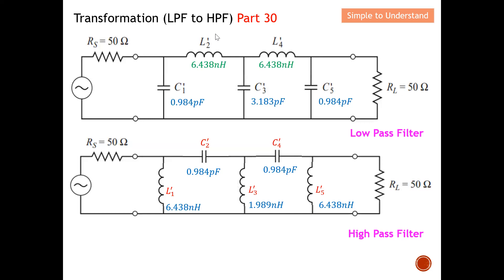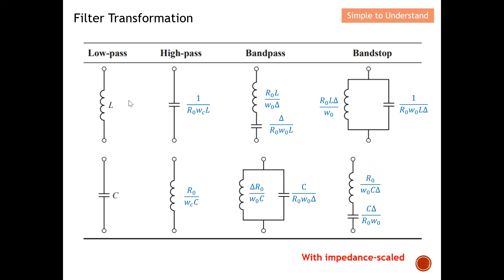On the previous Part 30 discussion, I demonstrated how to do a filter transformation from low pass filter to high pass filter. This diagram shows the lumped element having the characteristics of a low pass filter. With different values of lumped elements, you can see that the capacitor becomes an inductor and the inductor becomes a capacitor — with this you achieve a high pass filter. I showed step by step how to convert C to L to complete the high pass filter.